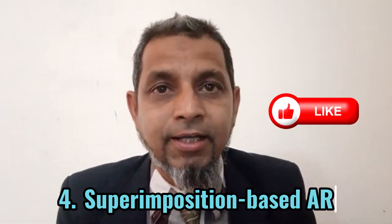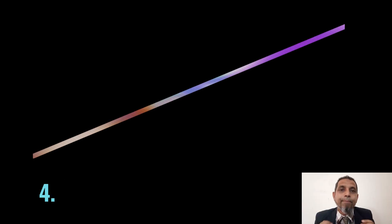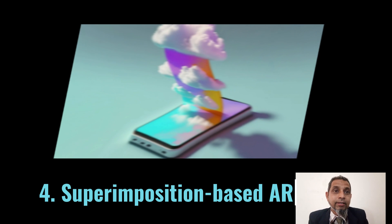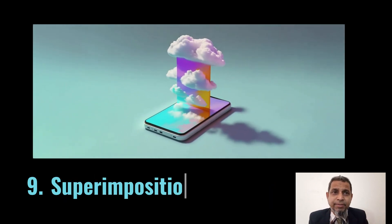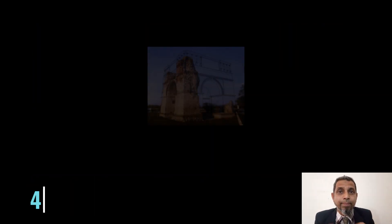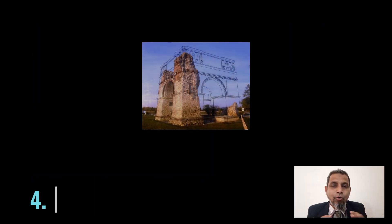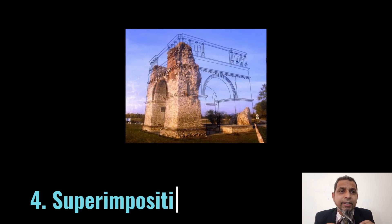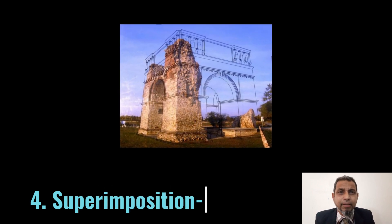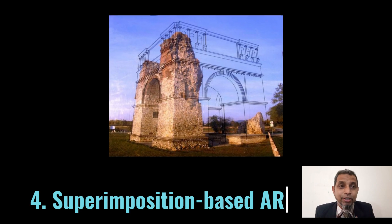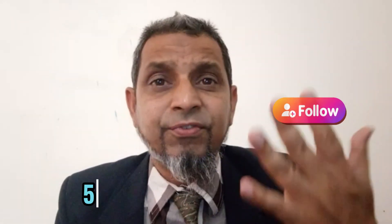Number four — superimposition-based AR. Superimposition-based AR is a technique that uses object recognition to replace an original image with augmented views. The augmented image can replace the original image partially or fully.